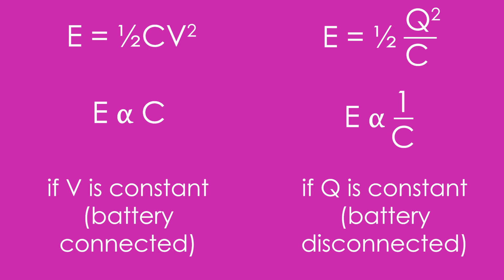If it's disconnected, we use E equals half Q squared over C. So that means energy is inversely proportional to the capacitance.